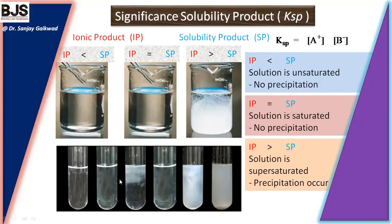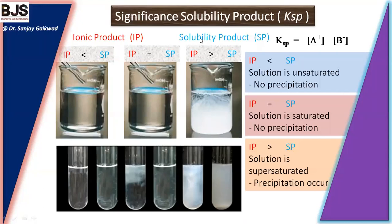At the unsaturated condition, adding a small quantity and stirring causes it to dissolve immediately. At the saturated condition, when we add the solute it starts to form a precipitate, but after stirring it dissolves again. When the next molecule of salt is added, it gives formation of precipitate again. In this way, the ionic product is a variable quantity, but solubility product is a fixed quantity at a particular temperature.